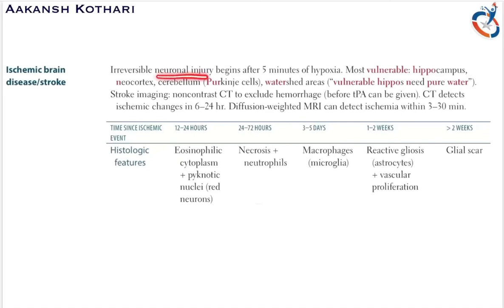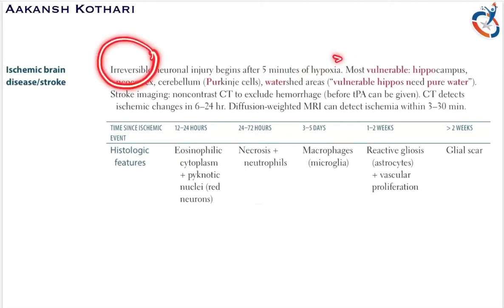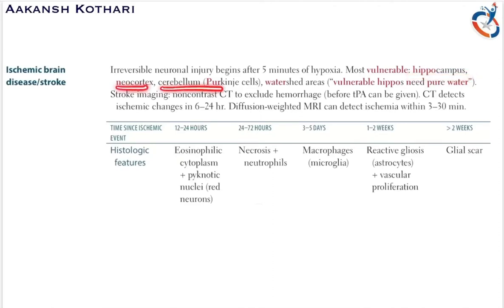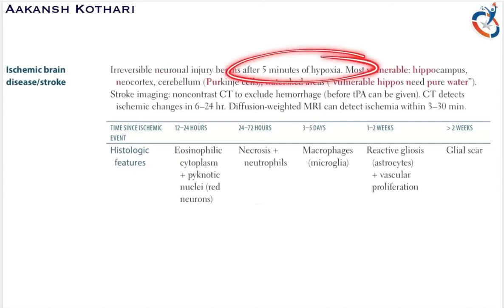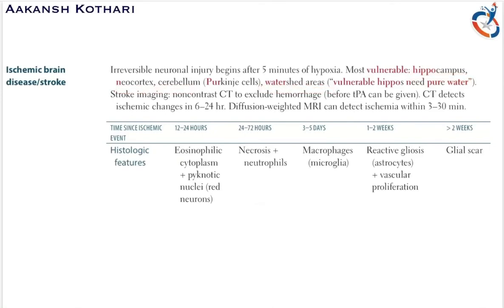There is irreversible neuronal injury that begins five minutes after hypoxia. The most vulnerable places in the brain are the hippocampus, neocortex, Purkinje cells of the cerebellum, and watershed areas — remembered by the mnemonic 'vulnerable hippos need pure water.' These are irreversible neuronal changes that begin in five minutes of hypoxia.